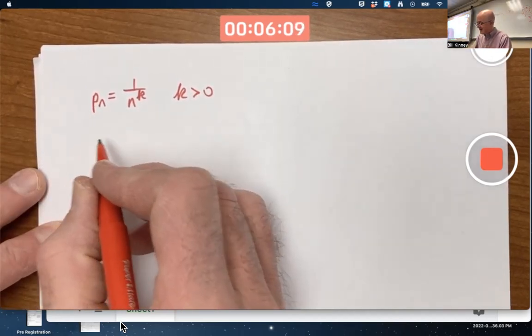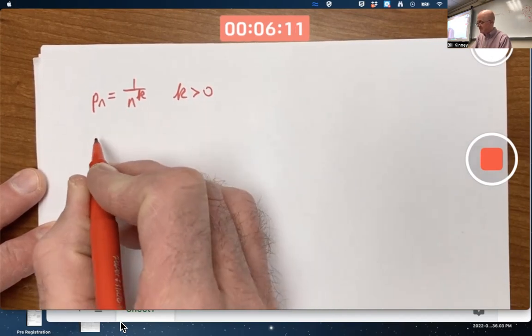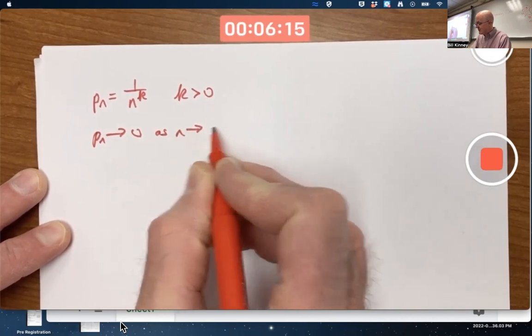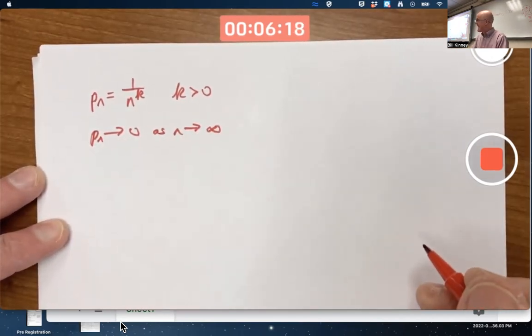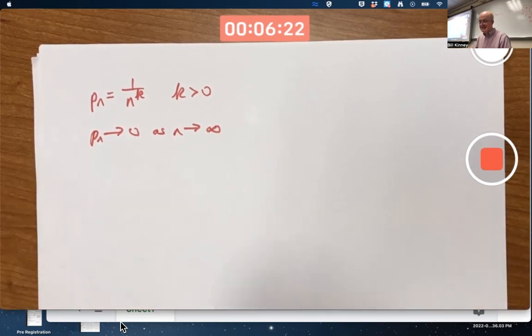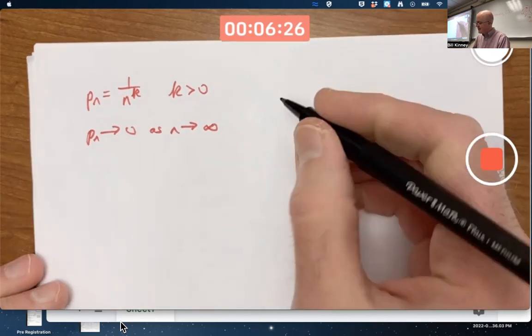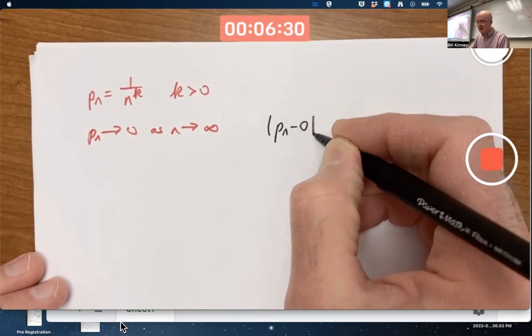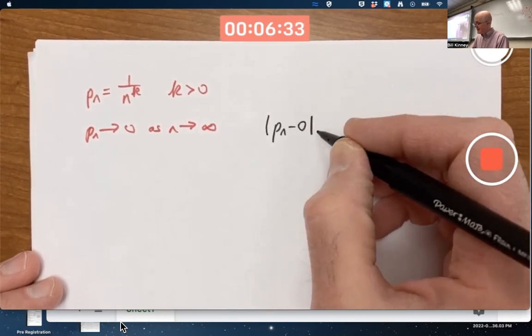Zero. Yeah, pn, clearly with k being positive here, pn goes to 0 as n goes to infinity. Is that easy to prove? Would you have to prove it? I would not require you to prove it on the test. If you were trying to think about proving it, you'd want to think about the absolute value of pn minus 0 and show that goes to 0 as n goes to infinity.